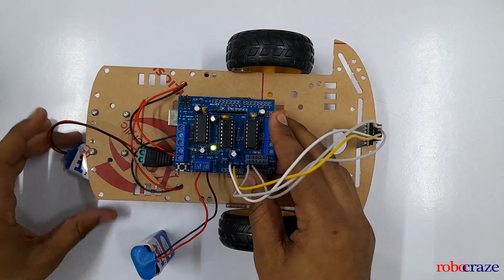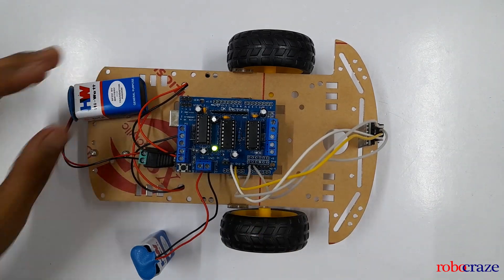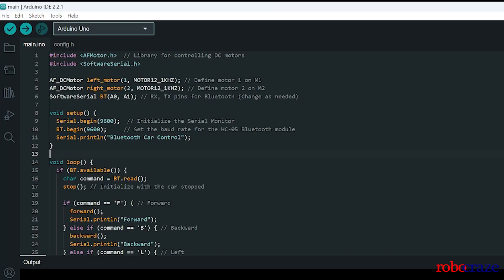We'll connect the jack and now your car is completely assembled. Let's start with the code explanation for Bluetooth controlled car. Here we are using two libraries: AFMotor library which will help us in controlling DC motor, and another one will be SoftwareSerial which will help us in communicating to establish communication between Bluetooth module and the Arduino.